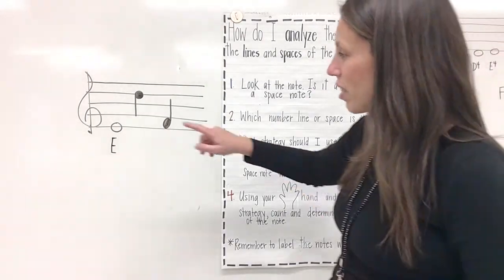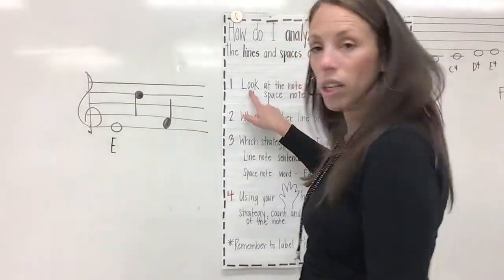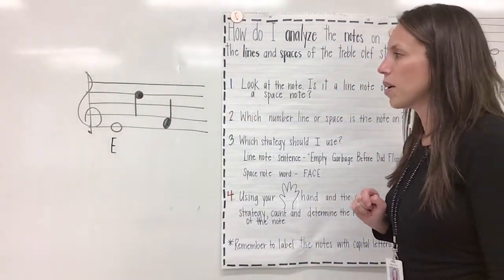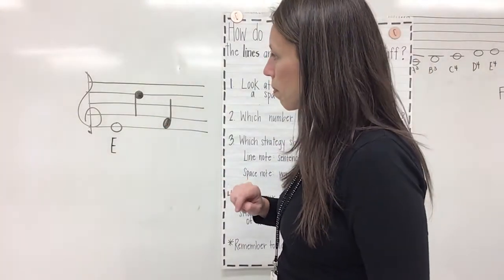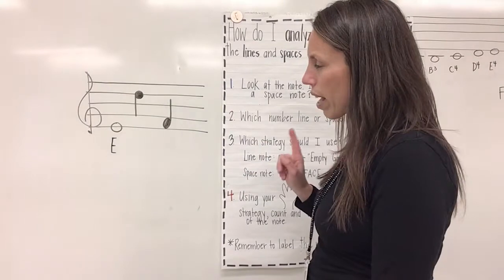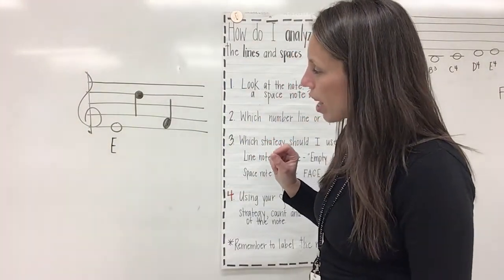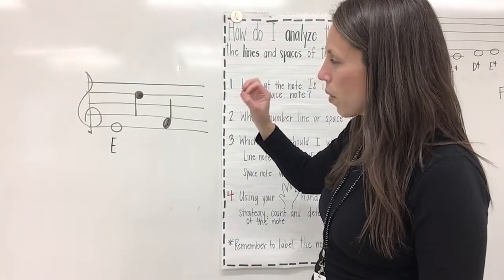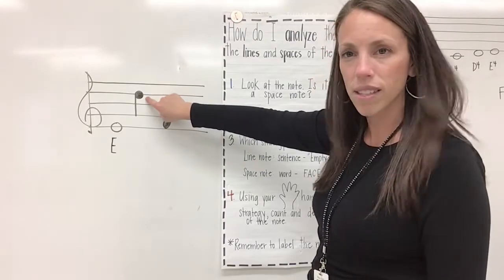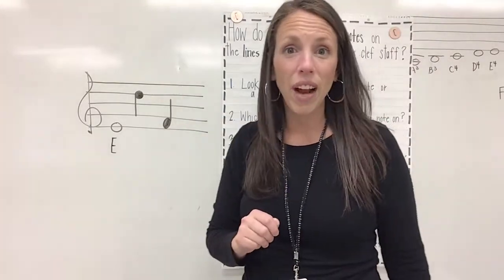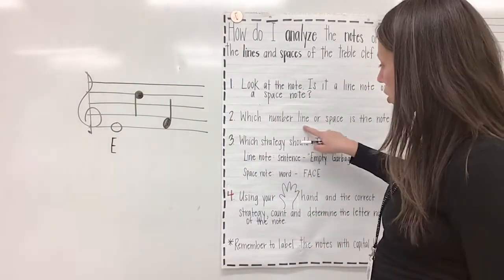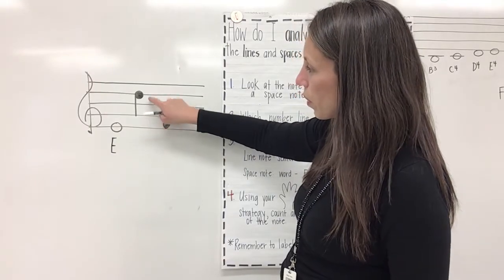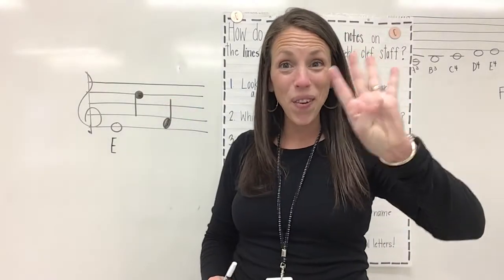All right, friends, let's try the second note. We're going back to step one — we're looking at that note. Is it a line note or a space note? Just because that note head is colored in doesn't mean we can't figure this one out. You have to look at the placement of that note. Is the line going through the center, or is that note head in a space? Yell it out — is this a line note or a space note? You're right, it's a line note. Which number line or space is that note on? Let's count together: one, two, three, four. Line four.